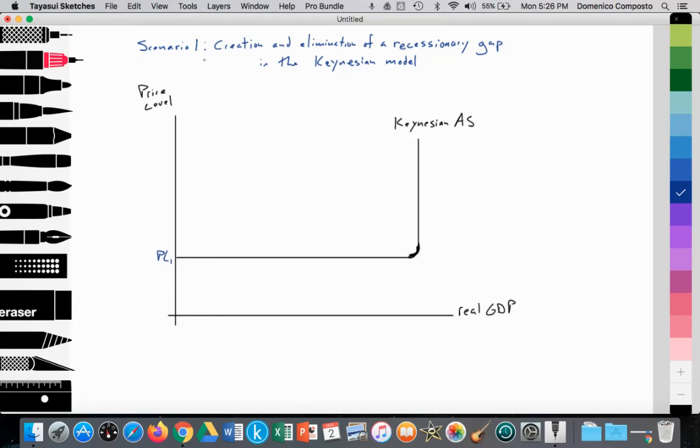So this scenario, there'll be two. Scenario one is looking at the creation and elimination of a recessionary gap in the Keynesian model. And we're going to be applying some new concepts here that we will see later on.